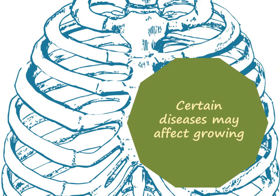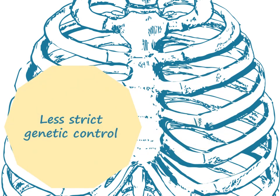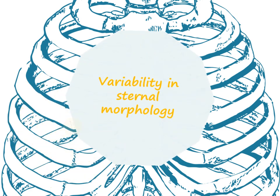Certain diseases, such as congenital heart diseases and acute and chronic infectious diseases, may affect growth. But again, why only for the sternum? This does not seem to account for the wider variability of sternum growth. Maybe it is due to less strict genetic control over the timing of maturation in the sternum body, or variability in sternum morphology due to the variable number of ossification centers per sternebra, which may contribute to variable development timing among individuals.